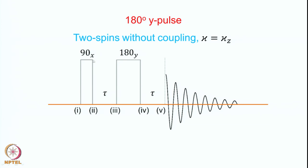We are now going to make a slight variation in this sequence to see what difference it makes — whether the phase of the RF pulse makes a difference and if so, in what way. That is the question we are going to ask. Therefore, we will simply change the phase of this pulse: instead of a 180-degree X pulse, we will apply the pulse along the Y axis and see what happens.